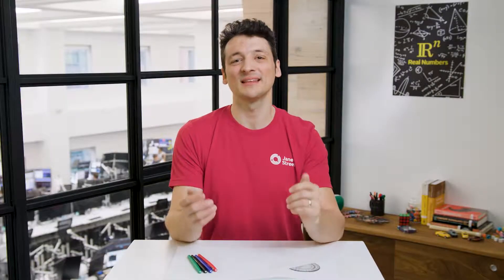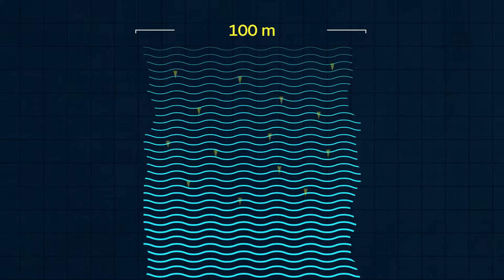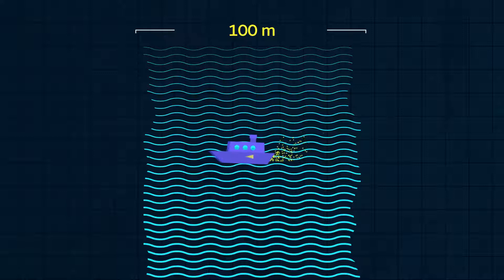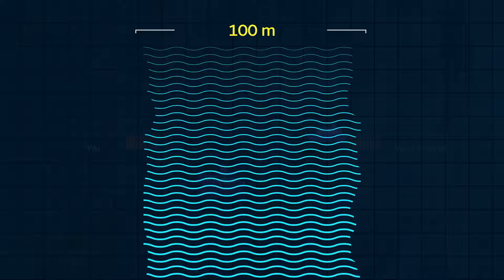The setup is the same as last week. The river banks are parallel lines 100 meters apart, and the river flows downstream at a constant rate at all points. When Wavy is in the water, its motor pushes it in whatever direction it's facing at a constant rate, and the flow of the water pulls the boat downstream at a different constant rate.